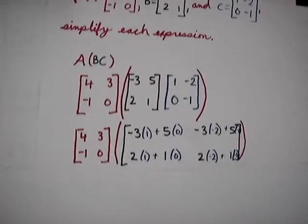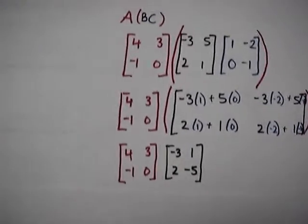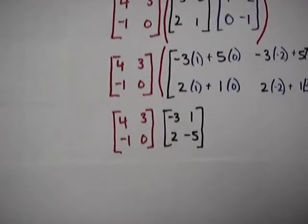And when we add those together and multiply them and add them together, we get the black matrix here.